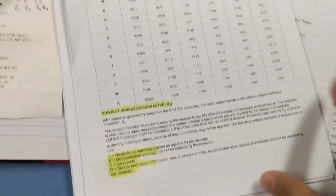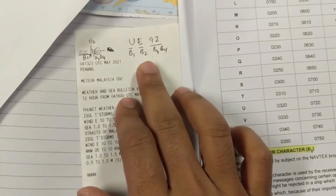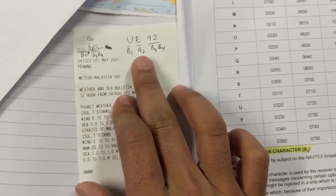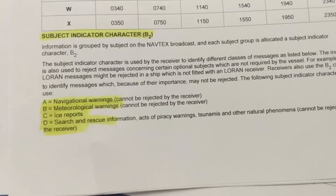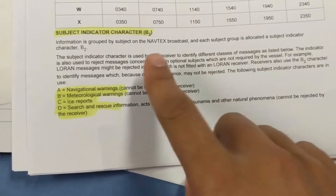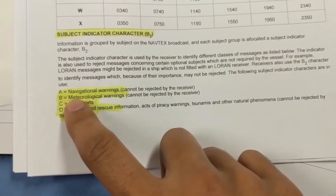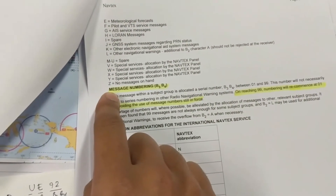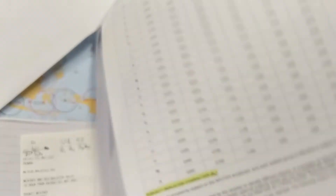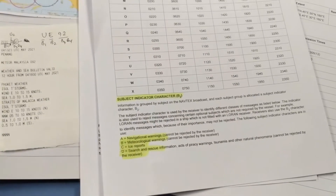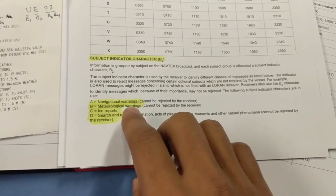Now let's talk about B2, which is the type of message. How many types of messages are there? There are message types from A to Z. However, only four of them are mandatory to receive: A, B, D, and L.